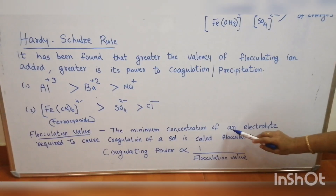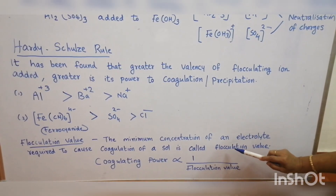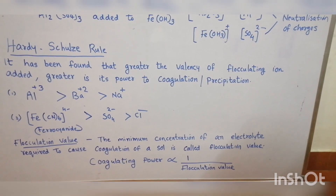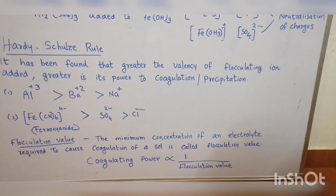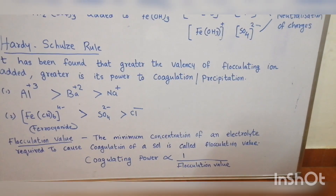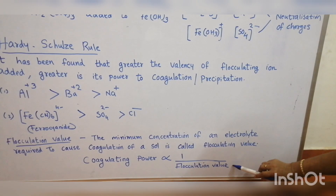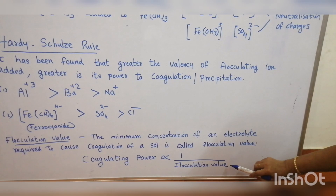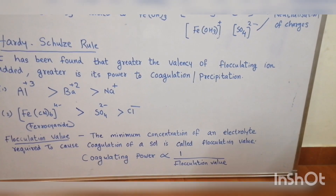The minimum concentration of an electrolyte required to cause coagulation of a sol is called the flocculation value. The flocculating or coagulating power is inversely proportional to the flocculation value. Higher the flocculation value, lower the coagulation power.